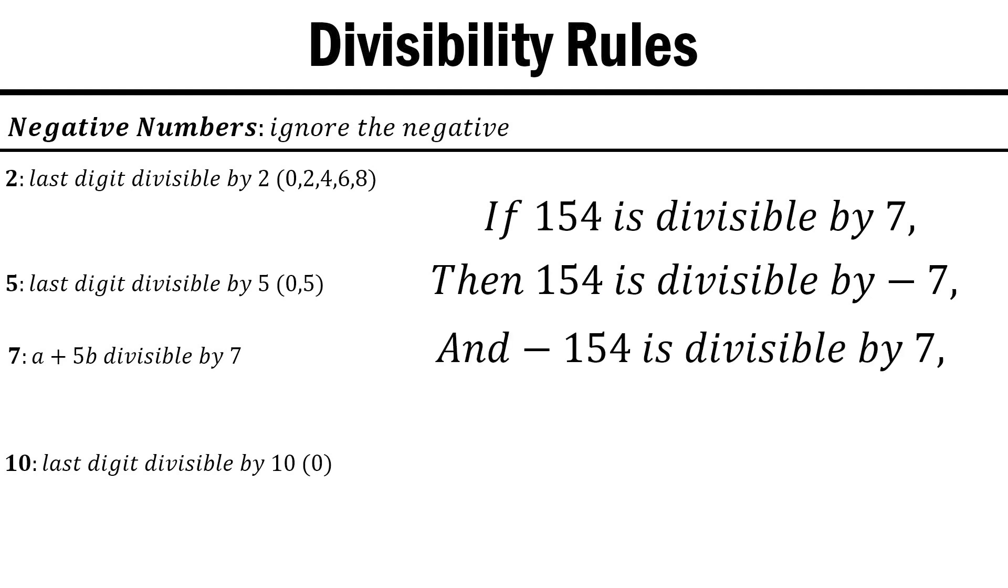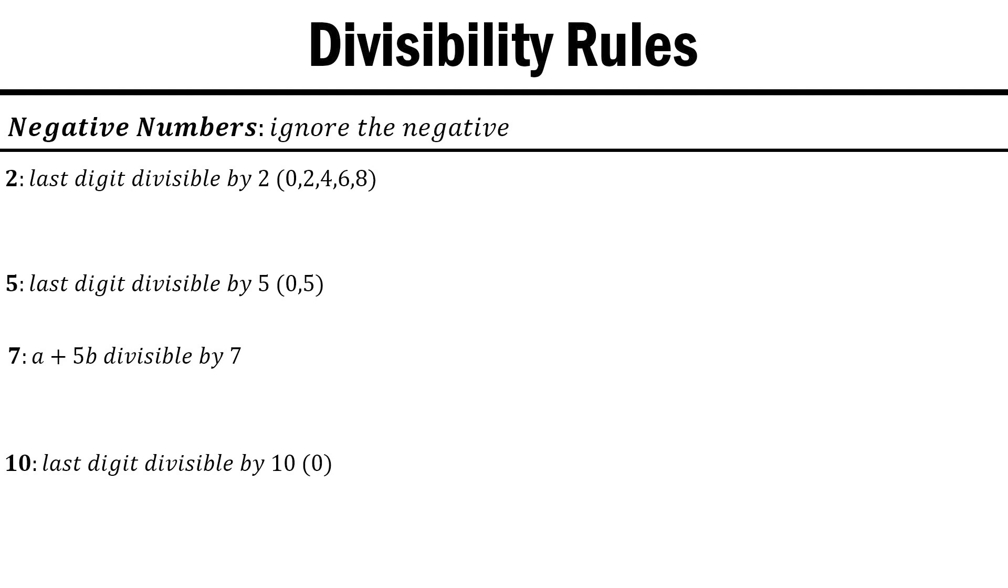And that negative 154 is divisible by 7 and negative 7 as well. So we can basically ignore the negative when we're dealing with divisibility. We also know that 0 does not divide any integers, and 1 divides all integers.